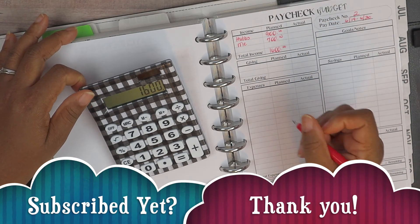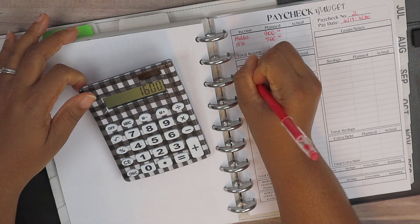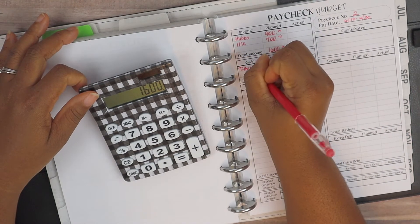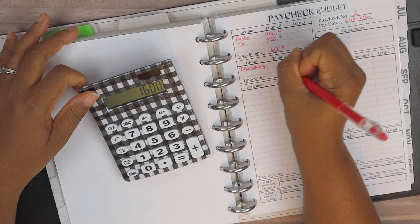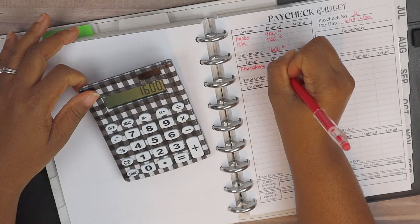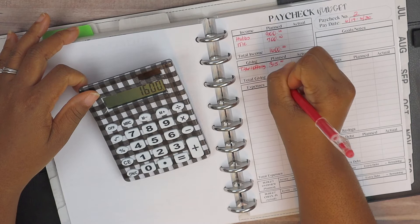As far as our giving, our tithe and offering, we are planning $315, and this is off of our gross income.